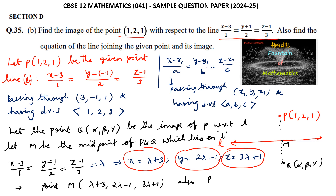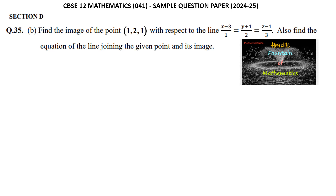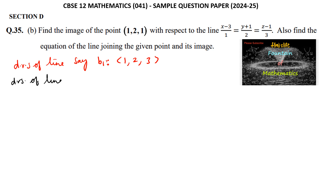We can see that PM is perpendicular to the given line, and hence the dot product of their direction ratios should be equal to 0. The direction ratios of the given line B₁ are (1, 2, 3). Point P is (1, 2, 1) and point M is (λ + 3, 2λ − 1, 3λ + 1).